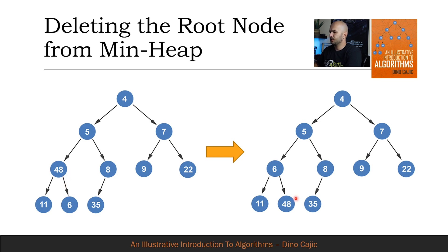Node 48 has no further comparisons to make. Minheap is achieved again after the deletion of the root node.